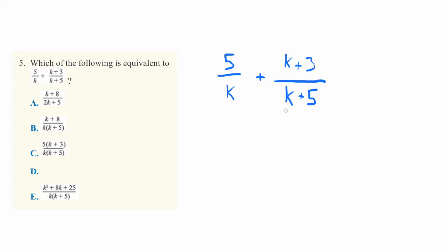And the way to get these to have the same denominator is to make sure that this one has a k plus 5 multiplier and this other one has a k multiplier. Let me show you what I mean.